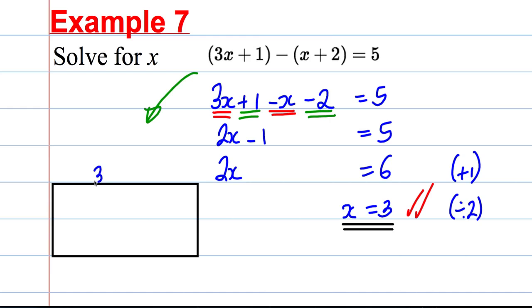It might say that we have a rectangle, it has the width of 3x plus 1 and it has a height of x plus 2 and it might tell you the difference between the width and the height is 5 centimeters. It might tell you something like that and it might say therefore solve for x. So if the difference is 5 you would say that 3x plus 1 the width take away x plus 2 is equal to 5. That's how you would generate that equation then you would solve it as I've done there.